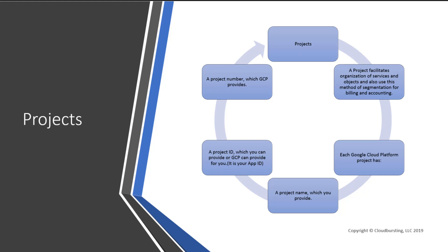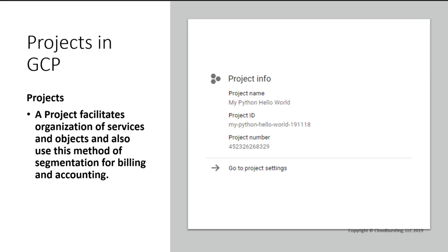Each GCP project is going to have a name, a project ID, and a project number. When we go through the demo on projects, we'll talk more about that and you'll see exactly how this all comes together. A project is meant to facilitate the organization of your services, objects, and also for billing and accounting purposes. As you can see, we have a project name, a project ID, and a project number.